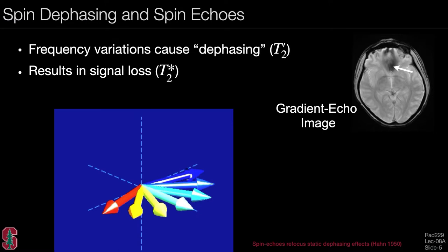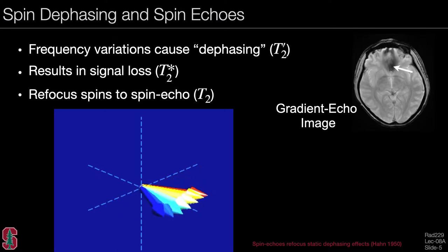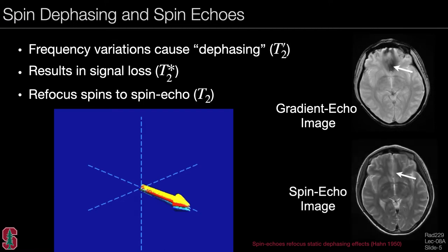On this gradient echo image, you see a signal dropout due to dephasing near an airspace in the brain. We can refocus the spins to what's called a spin echo, which gives us a pure T2 contrast. We do this by playing a refocusing RF pulse that flips the spins over. The spins then rephase according to the same frequency variations that caused dephasing, and the result is they come together and form a spin echo. In the spin echo image, the signal shading effects are avoided.